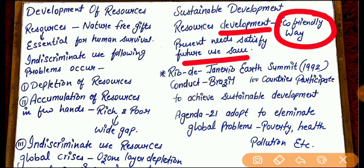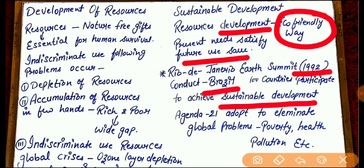To achieve sustainable development, an Earth Summit was held in 1992 at Rio de Janeiro, Brazil. This Rio de Janeiro Earth Summit was conducted by delegates of 100 countries to achieve sustainable development and to eliminate some global problems. Agenda 21 was also adopted to address issues like poverty, health, and pollution — problems that are growing by leaps and bounds nowadays. The Earth Summit aimed to achieve sustainable development and eliminate such problems.